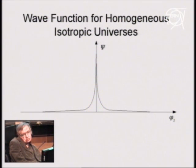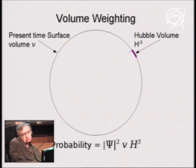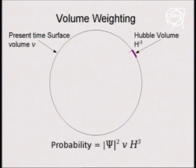This is what one could measure if one could observe the whole of the surface at the present time. But we aren't angels with a view of the whole universe. Instead, we can see only a small part of the surface, roughly a patch of size the present Hubble radius.